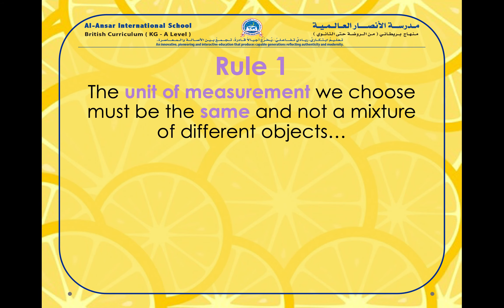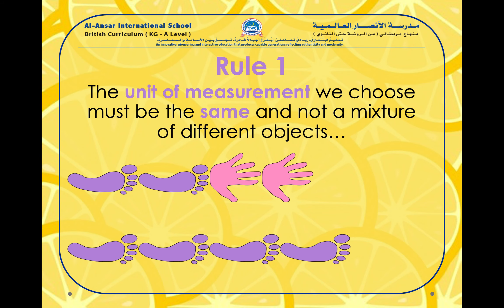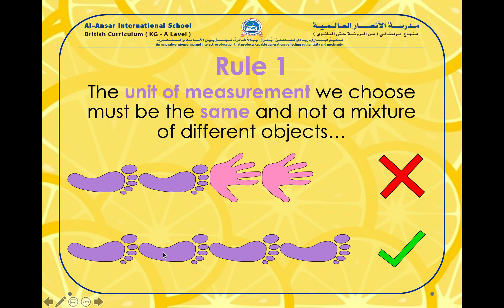Rule number one. The unit of measurement that we choose must be the same and not a mixture of different objects. That means we need to use the same object all the time — we cannot use different objects. So we cannot use hands and feet. If we're measuring an object, we need to use only one object. So here we need to use only feet; we cannot use feet and hands.